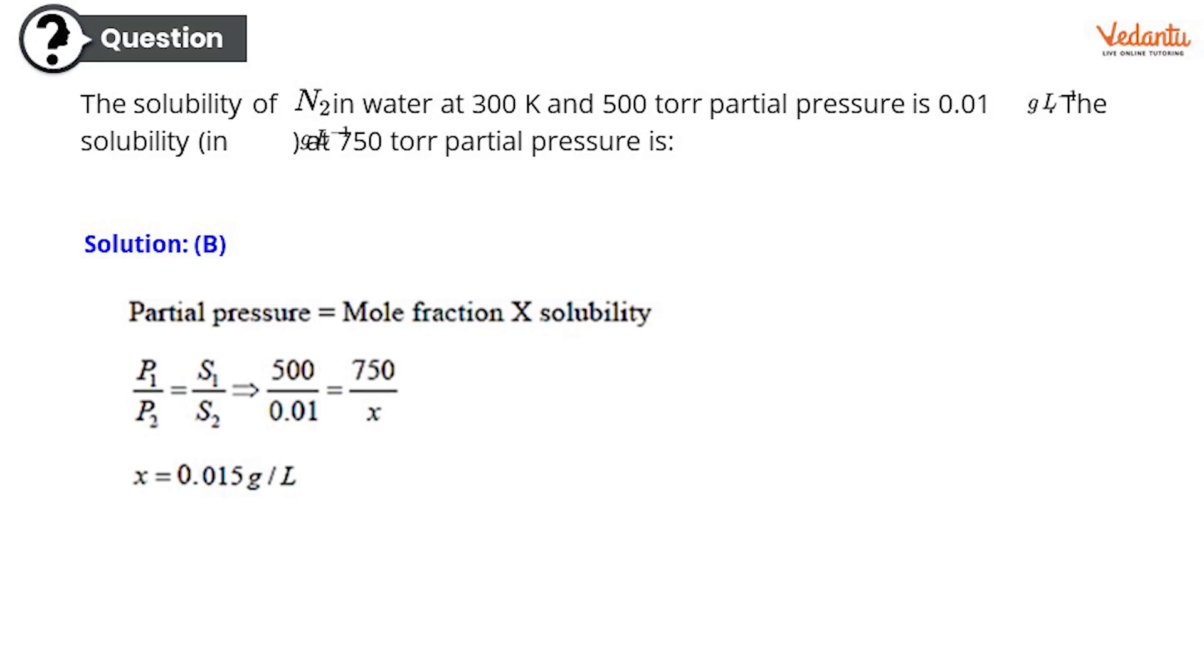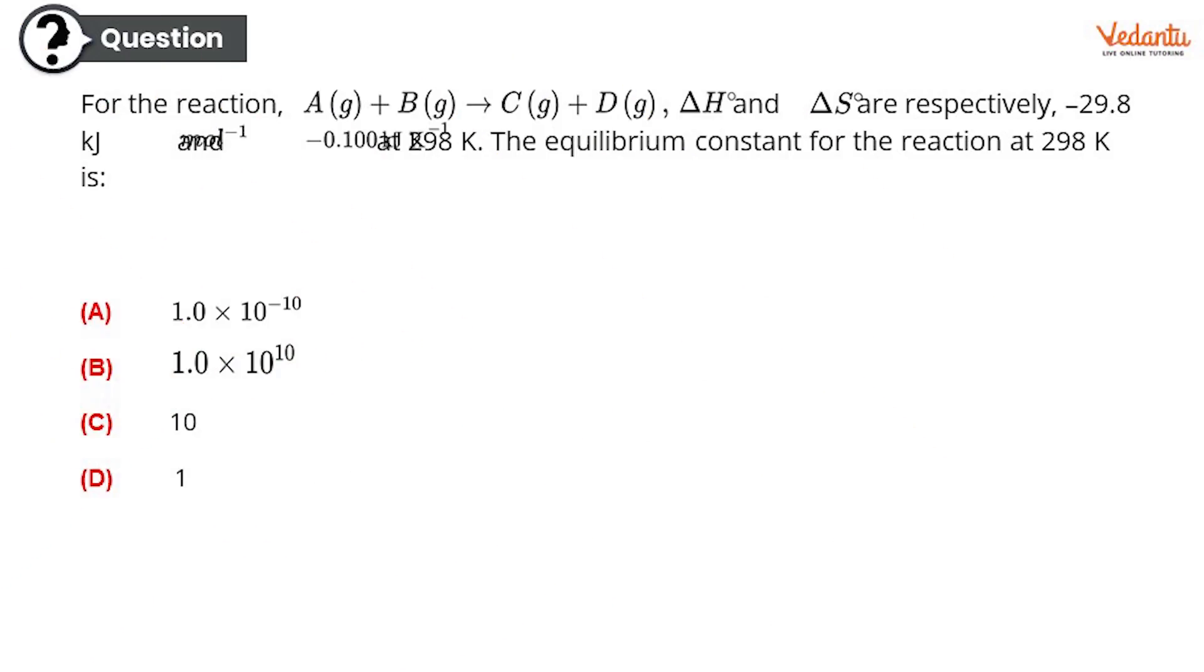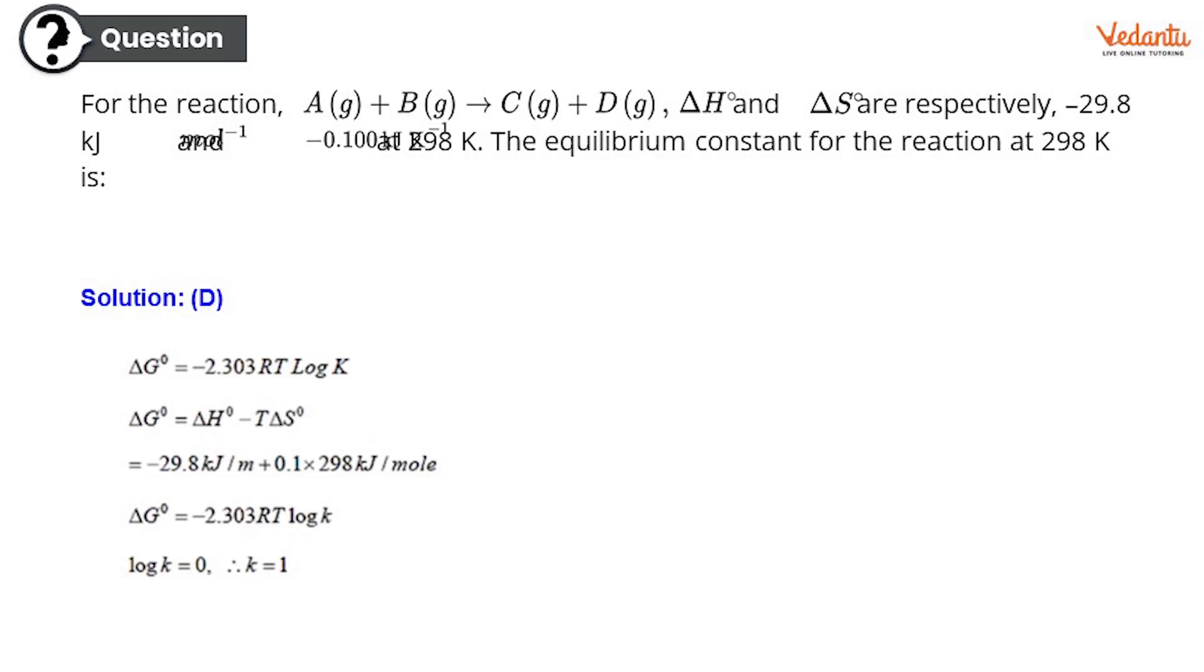Let's move on to the next question. And it is the next question here. For the reaction A plus B giving C plus D, where all the reactants and products are in gaseous phase, delta H degree and delta S degree are respectively minus 29.8 kJ per mole and 0.1 kJ per Kelvin at 298 Kelvin. The equilibrium constant for the reaction at 298 Kelvin is out of these options which is the correct answer. So the answer is 1. And here is the explanation guys. This is the complete equation using which this has been solved. You can see it and take it for your reference.